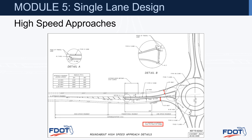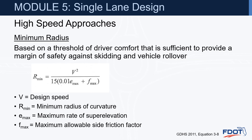The exhibit shows the curvatures and tangents to be provided in design: a curve to the right (AR1), then a 100-foot minimum tangent, a curve to the left (AR2), another tangent, and then a curve to the right entering the roundabout. The minimum radius is based on a threshold of driver comfort sufficient to provide a margin of safety against skidding and vehicle rollover, using the equation with design speed, radius of curvature, superelevation, and side friction factor.